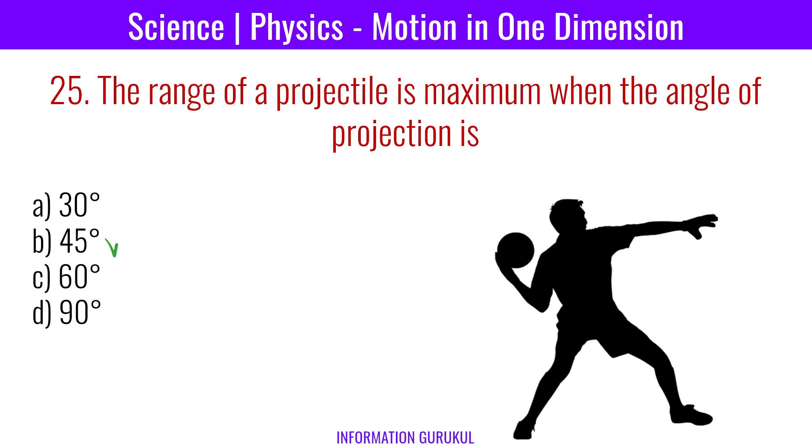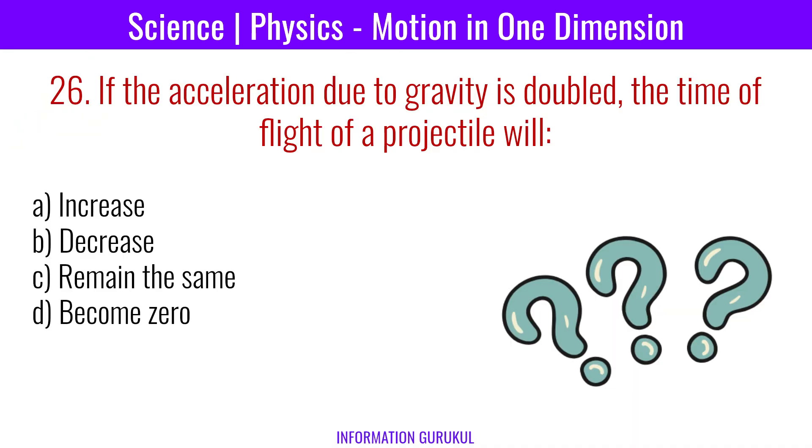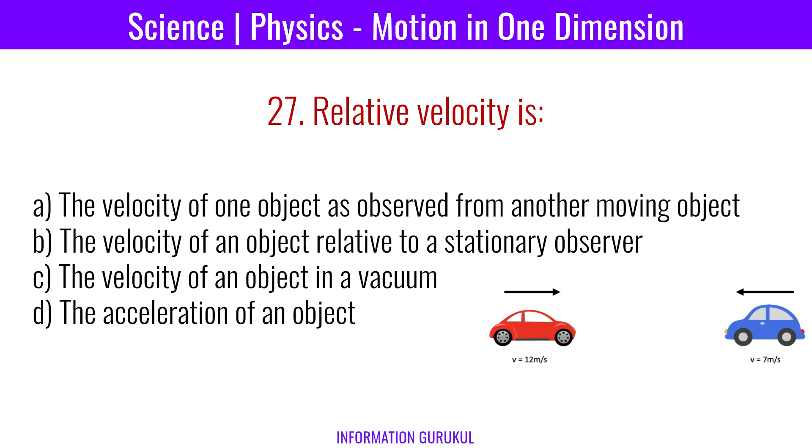The range of a projectile is maximum when the angle of projection is 45 degrees. If the acceleration due to gravity is doubled, the time of flight of a projectile will decrease. Relative velocity is the velocity of one object as observed from another moving object.